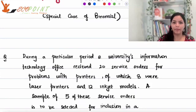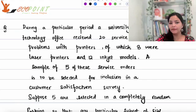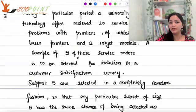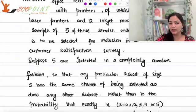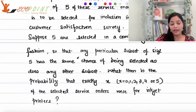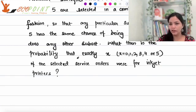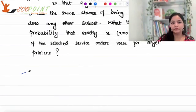Here I have a question for you guys. During a particular period, a university's information technology office received 20 service orders for problems with printers, of which 8 were laser printers, 12 inject models. A sample of size 5 of these service orders is to be selected for inclusion in a customer satisfaction survey. There are 8 laser printers and 12 inject.